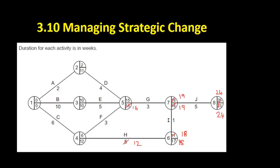Activity H has to finish by week 18 to allow us to do activity I and complete the project on time. That 18 minus 12 to give us the latest finish time for activity C. It's going to be 6.